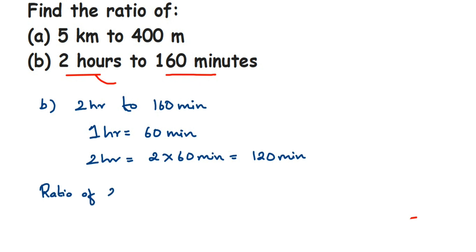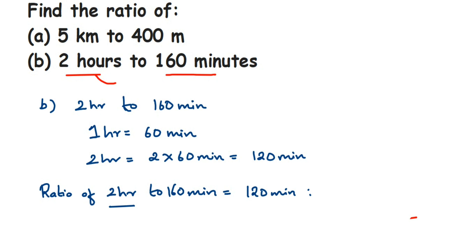Now we're going to find the ratio. The ratio of two hours to 160 minutes will be equal to — in place of two hours I'm going to write 120 minutes — so 120 minutes is to 160 minutes.